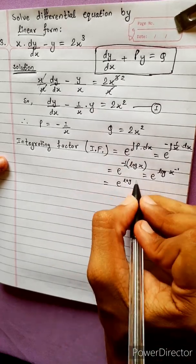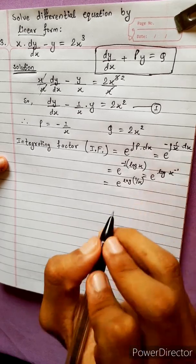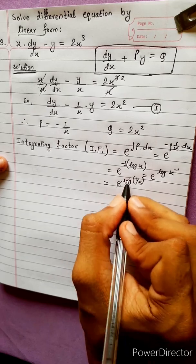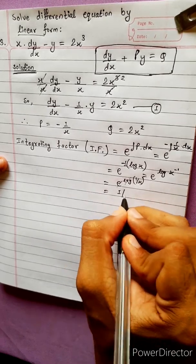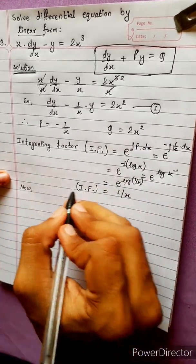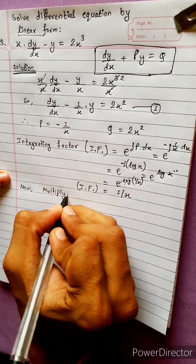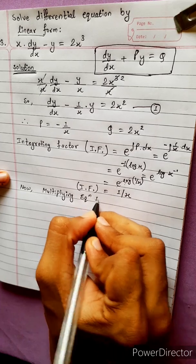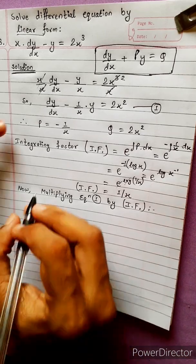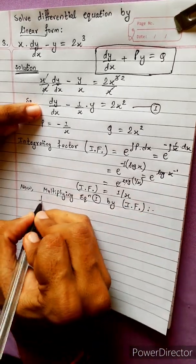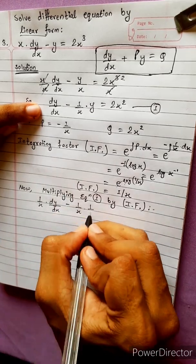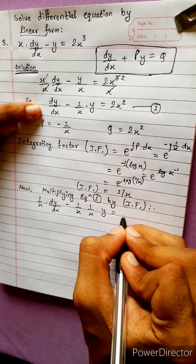So the integrating factor is e to the power of log x to the minus 1. Since exponential and log are inverse functions, this equals x to the power minus 1, which is 1/x. Multiplying through by 1/x: (1/x) dy/dx minus (1/x²)·y equals 2x squared.